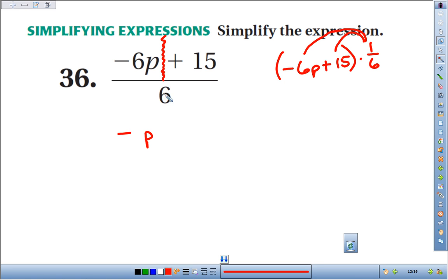And then 15 is going to fall down on the 6 as well. So positive 15 divided by 6, plus 15 over 6.